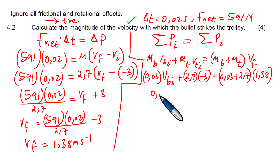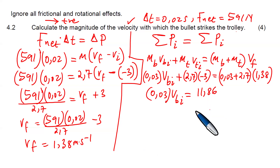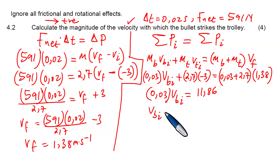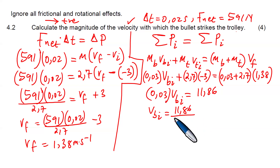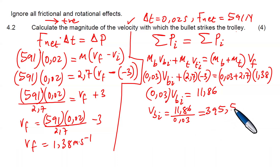So we have: 0.03 × V_BI plus the right-hand side terms. Working through the algebra, V_BI equals 11.86 divided by 0.03, and the answer is 395.58 meters per second. Because the examiner asked for the magnitude of the velocity with which the bullet strikes the trolley, we have our answer.